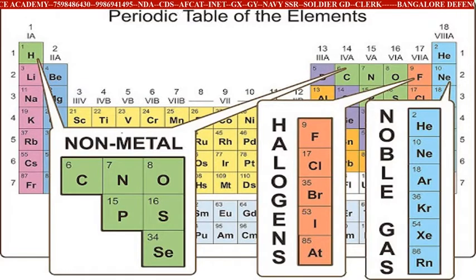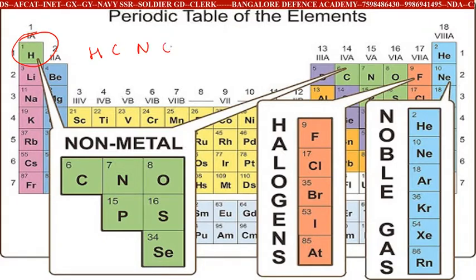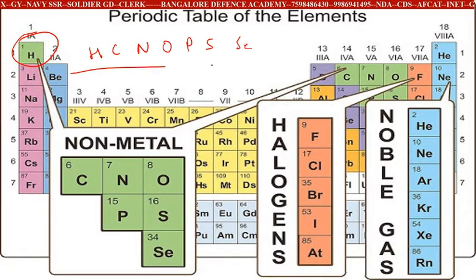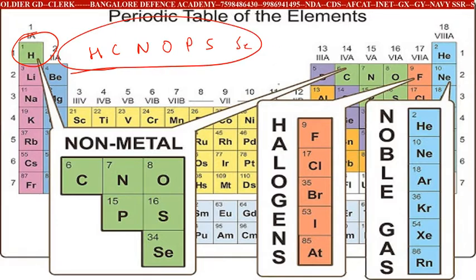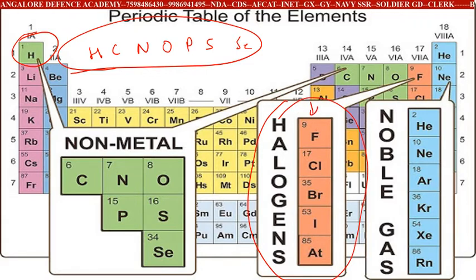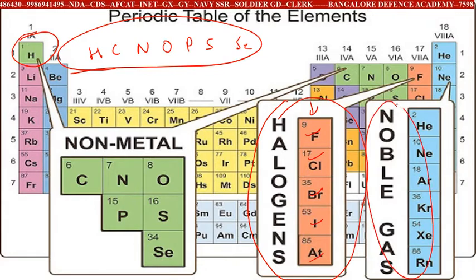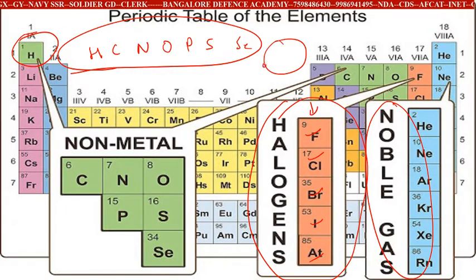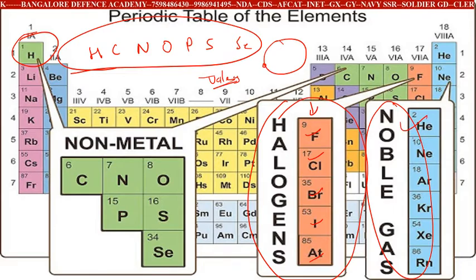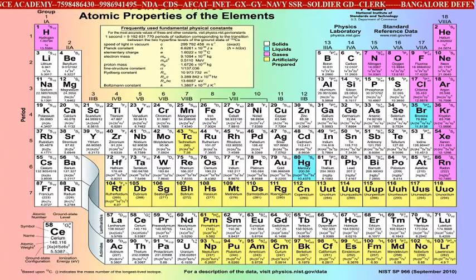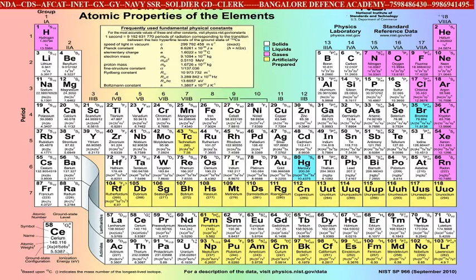Non-metals include hydrogen, carbon, nitrogen, oxygen, phosphorus, sulfur, and selenium. Halogens — fluorine, chlorine, bromine, iodine, and astatine — are mentioned separately. Noble gases, which occupy the last column, do not react with any metal because the last shell is completely filled — their valency is completely filled. This is what we call noble gases.